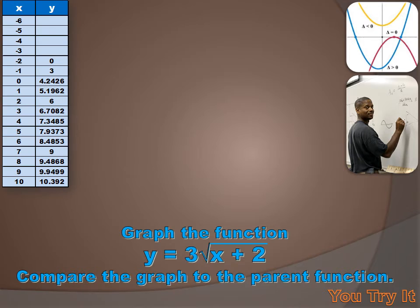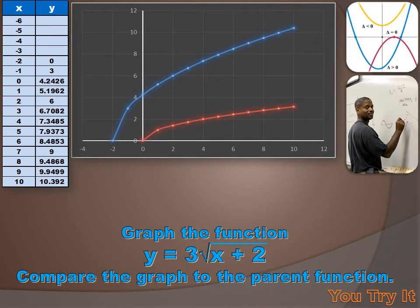First, I want to create a table of x values and y values. I picked x values starting at minus 6 up to positive 10. When I calculated my y values using y equals 3 times the square root of x plus 2, I discovered that some y values were imaginary numbers — square roots of negative numbers — so I can't use those. I'll start with an x value of minus 2; my domain is x greater than or equal to minus 2. When I graph those values, the blue line is the graph of y equals 3 times the square root of x plus 2, and the red line is the parent square root function.